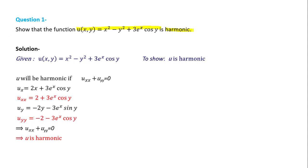Now we will solve a question where we need to show that a given function u is harmonic. Harmonic means u_xx + u_yy should equal 0. To get u_xx we first need u_x, the partial derivative of u with respect to x: this gives 2x plus 3e^x cos(y), treating y as a constant.